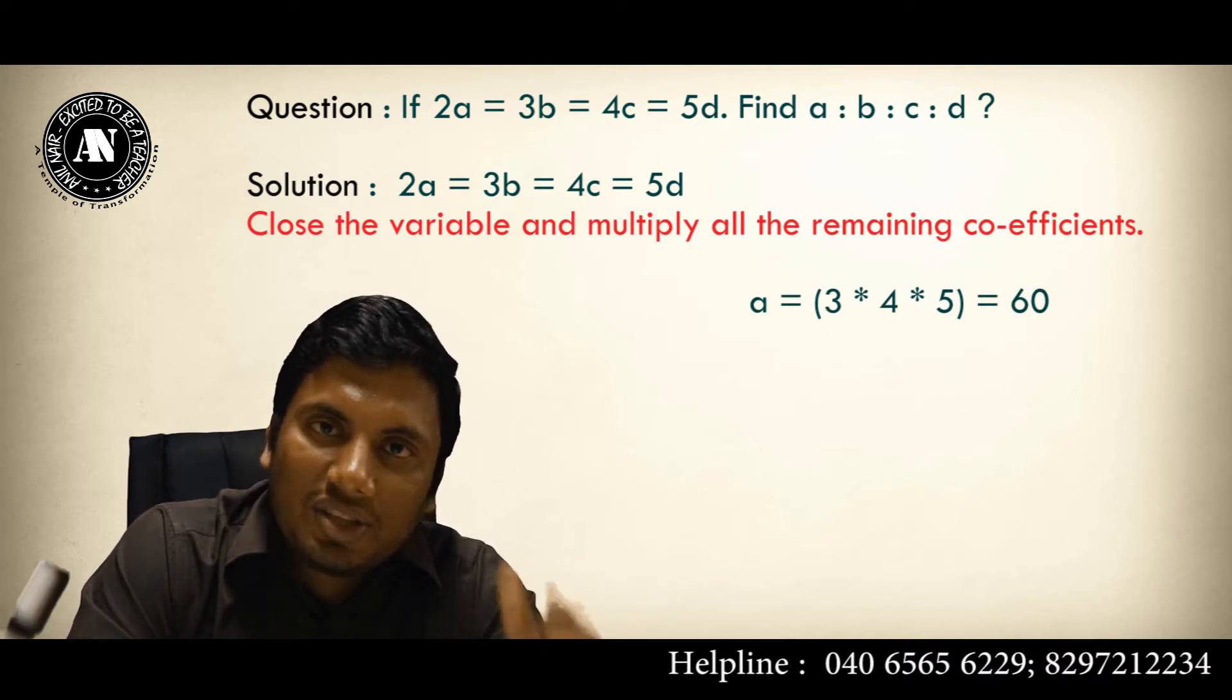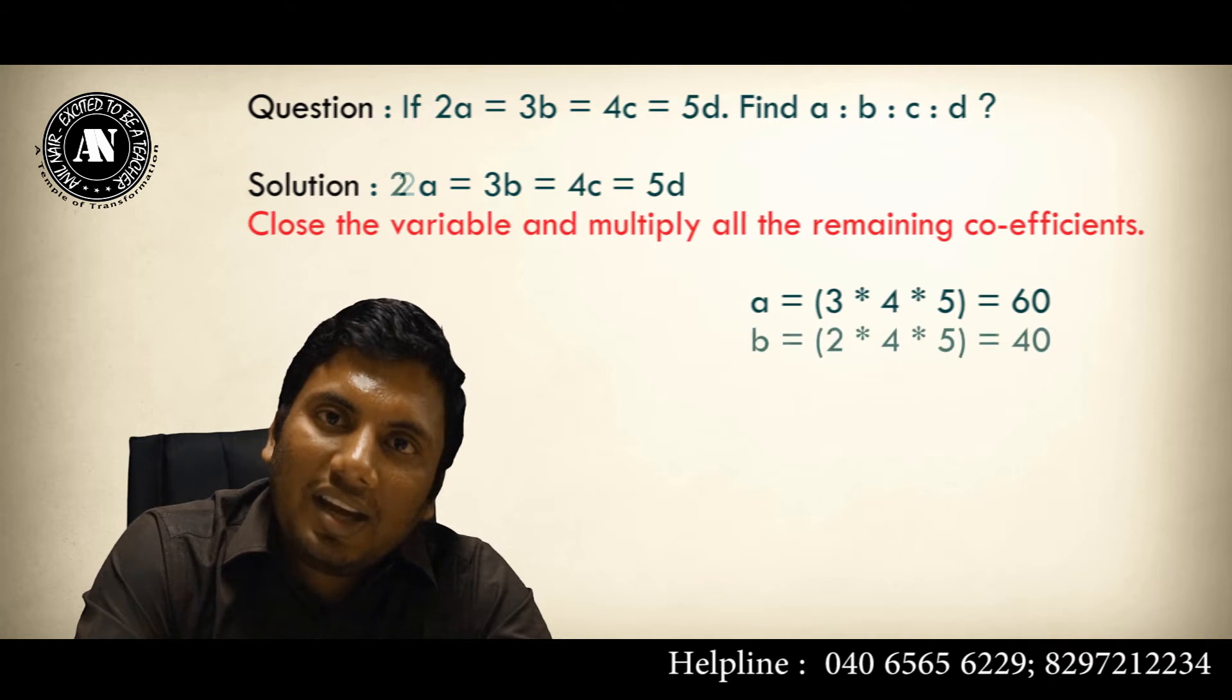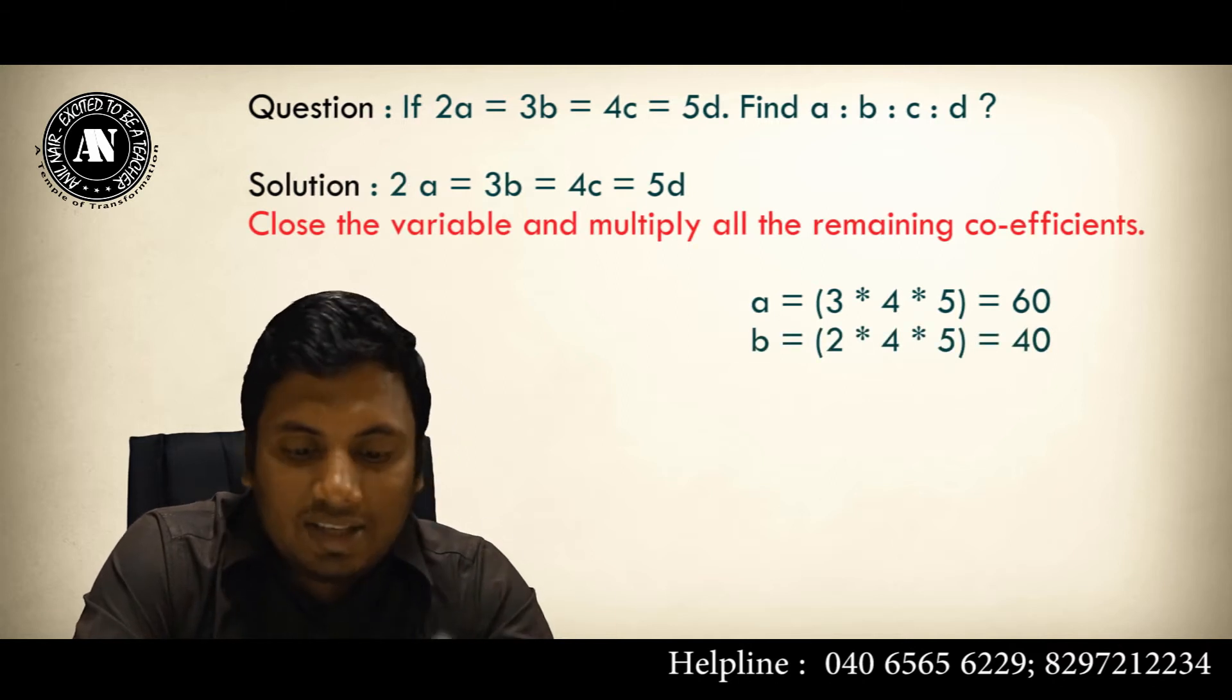3 times 4 is 12, 12 times 5 is 60. Next value, B. To get B, close B and multiply all the remaining variables. What are the remaining variables? 2 times 4 is 8, 8 times 5 is 40.